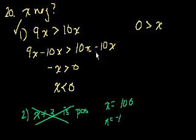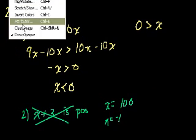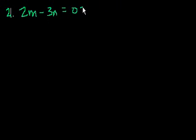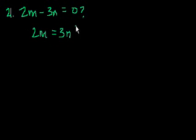Let's see how much time do I have. Oh, I'm doing well on time. It's clear. I'm on problem 21. Does 2m minus 3n equal 0? And let's just think about this. That's the same thing as asking. Does 2m equal 3n if you just add 3n to both sides? These are equivalent questions. So if you can answer one, you can answer the other.